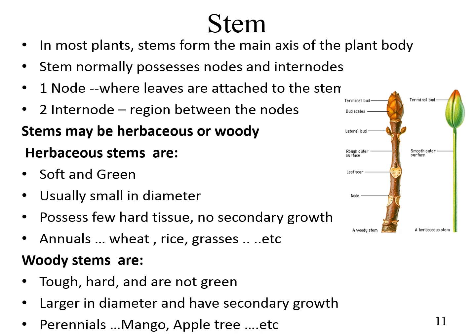In most plants, the stem forms the main axis of the plant body. Stem normally possesses nodes and internodes. Nodes are the parts of the stem where leaves are attached, whereas internodes are the regions between the nodes. Stems may be herbaceous or woody type.